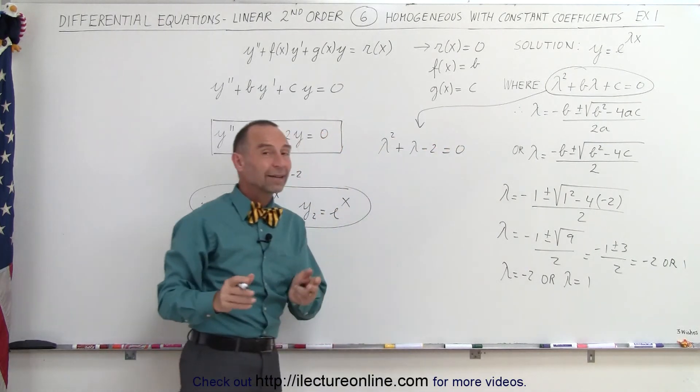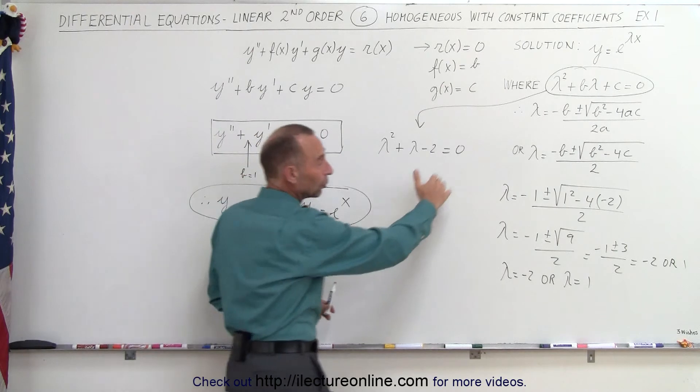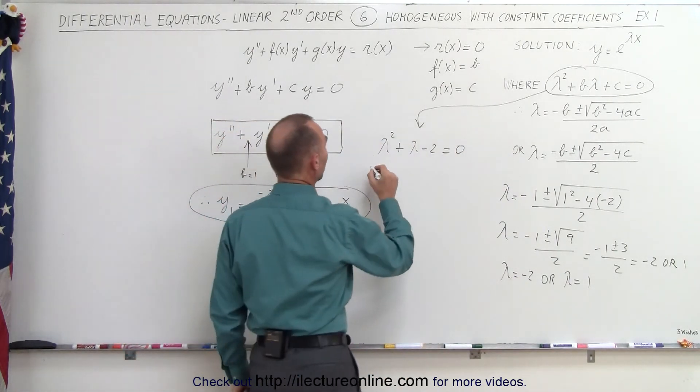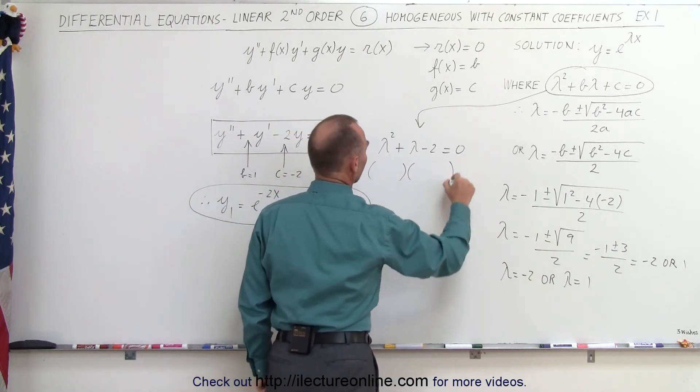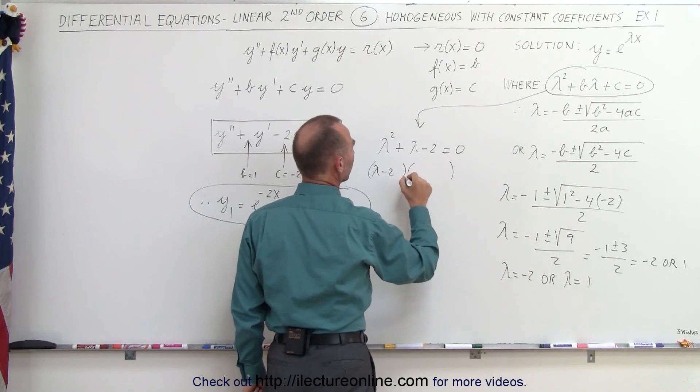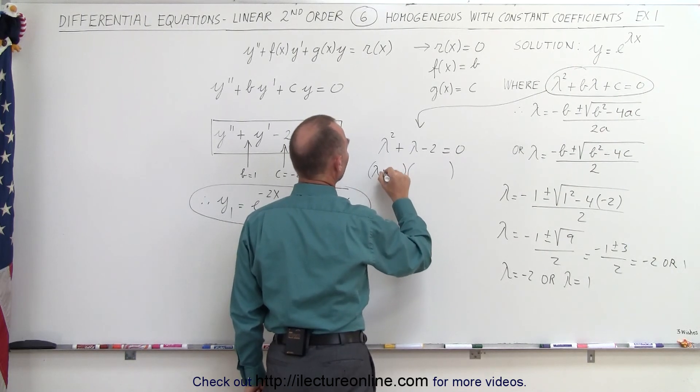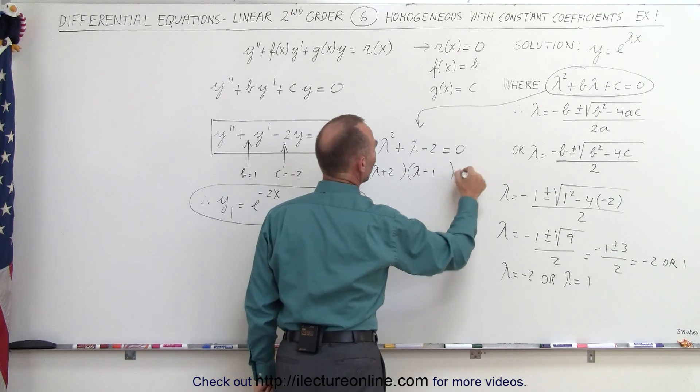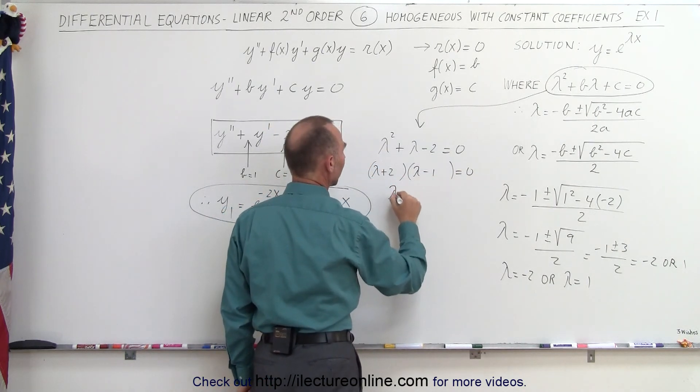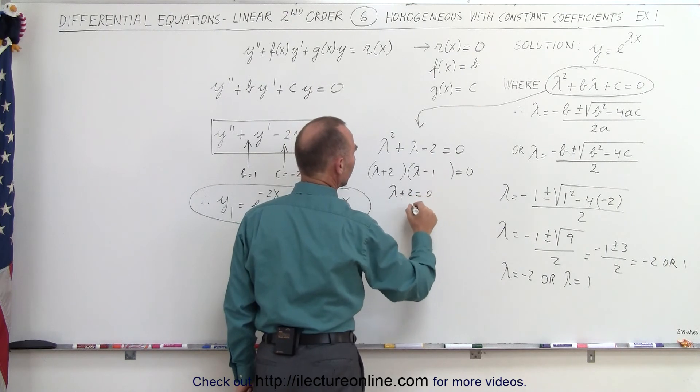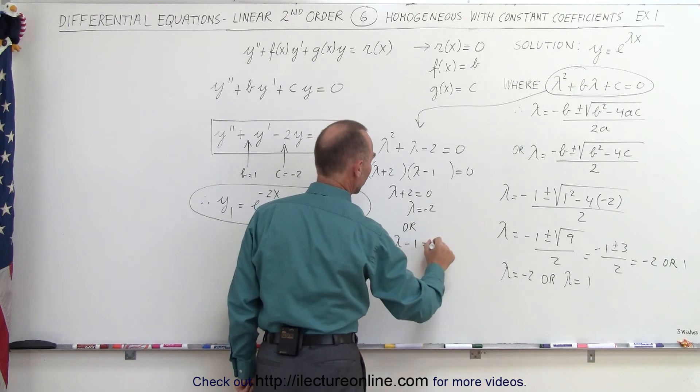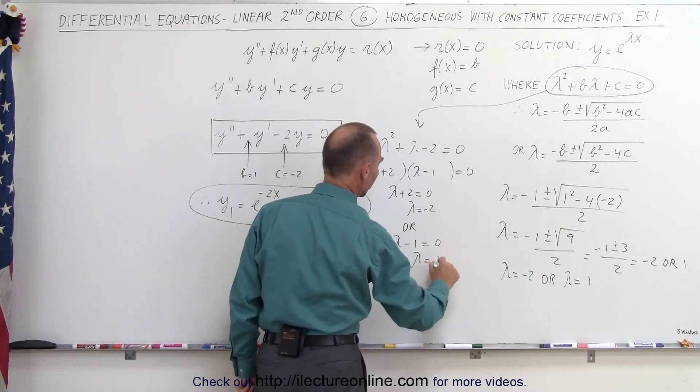Now, you can look at this and say, I can factor that. We don't have to go through the quadratic equation technique if we can simply factor this. If we factor this, we could write this as the product of lambda plus 2, lambda minus 1 equals 0. So if this times this equals 0, that means either lambda plus 2 equals 0, which means lambda equals negative 2, or lambda minus 1 equals 0, which means lambda equals 1.